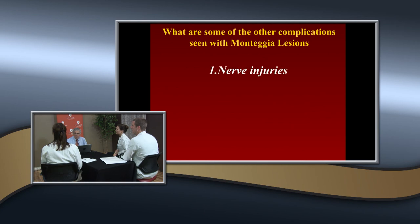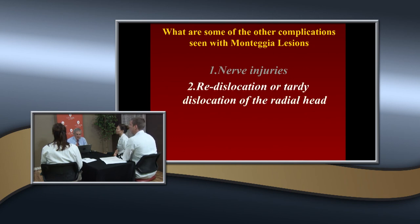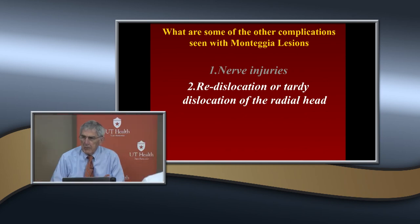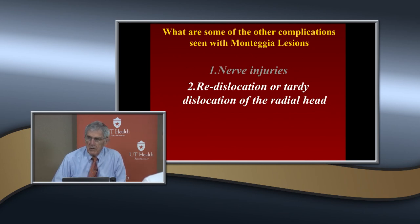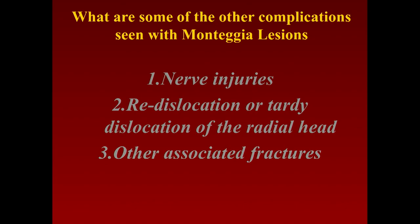Some of the other complications seen with Monteggia lesions: nerve injuries — which type has the highest incidence? Type 3. Redislocation or tardy dislocation of the radial head — this is seen mainly because if you have plastic deformation proximally, unless you really stabilize it well with three-point fixation on your cast, which is very difficult to do in proximal fractures, it will reform and then you get a late dislocation of the radial head. There are also associated fractures that can occur.